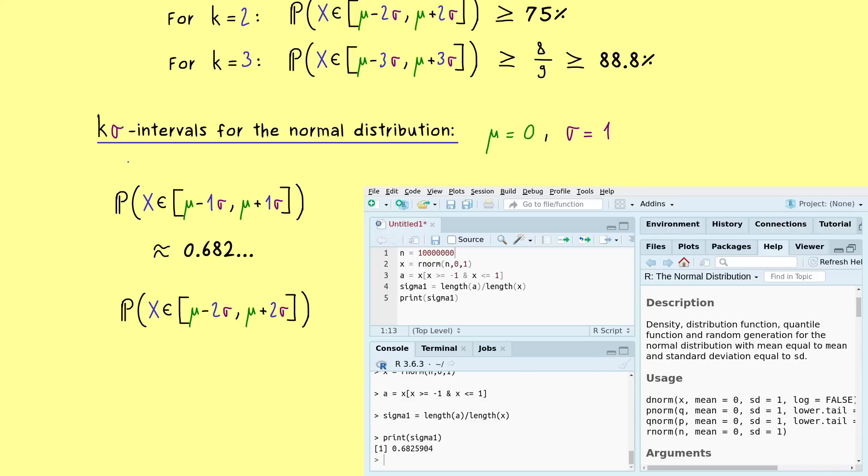And now in the same way, we could simulate the 2-sigma interval here. We don't have to change much. Instead of a 1, we have a 2 here. And then let's run the script to see what we get here. Maybe let's run it more times, but we definitely see we are at 95%. So you see, our probability here is much higher than our estimate from the Chebyshev's inequality.